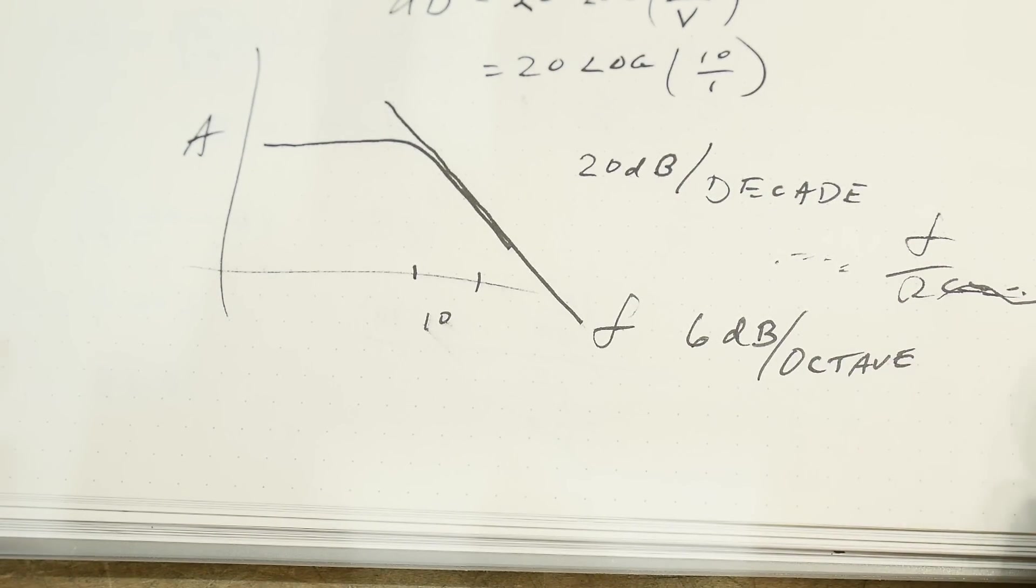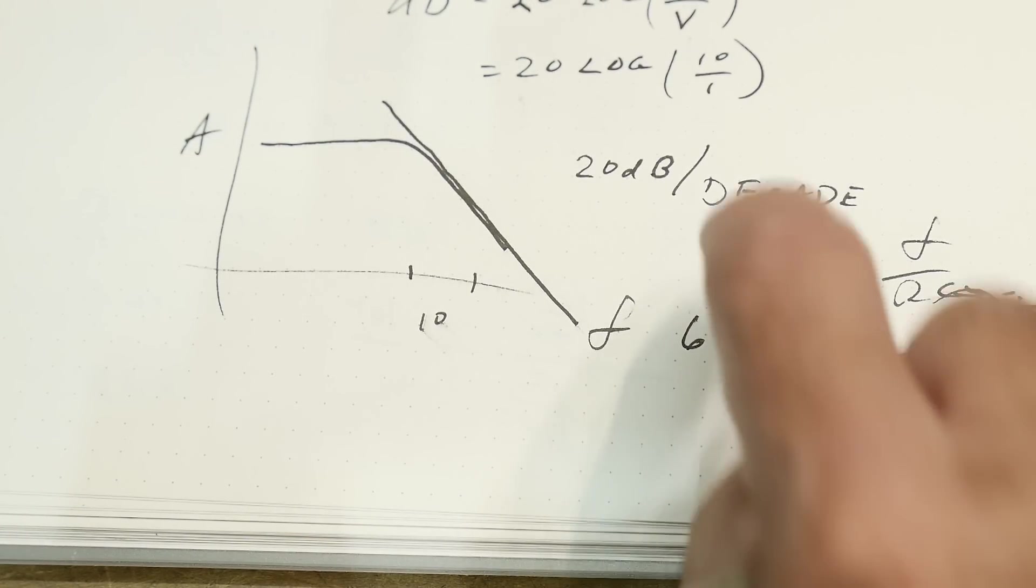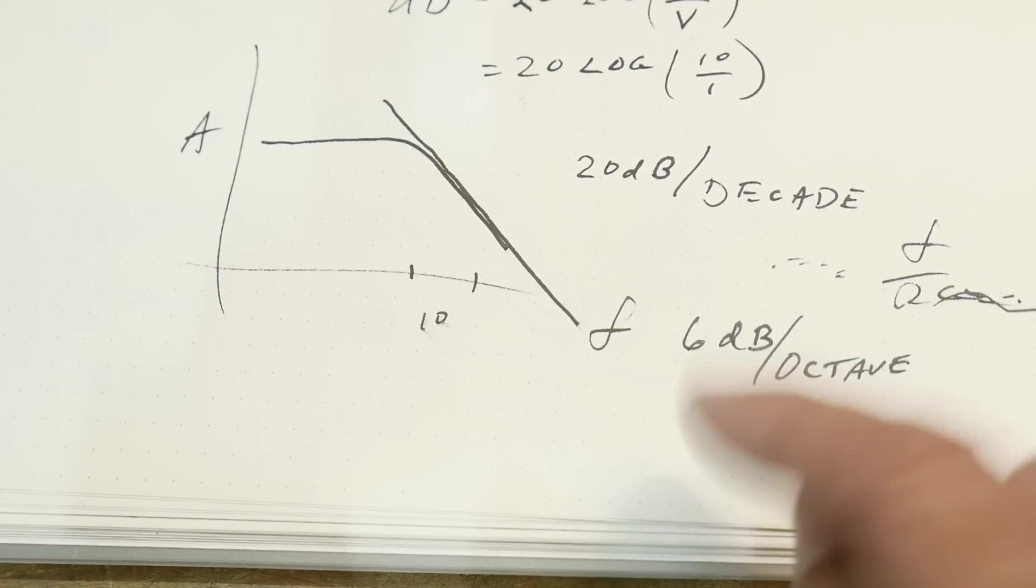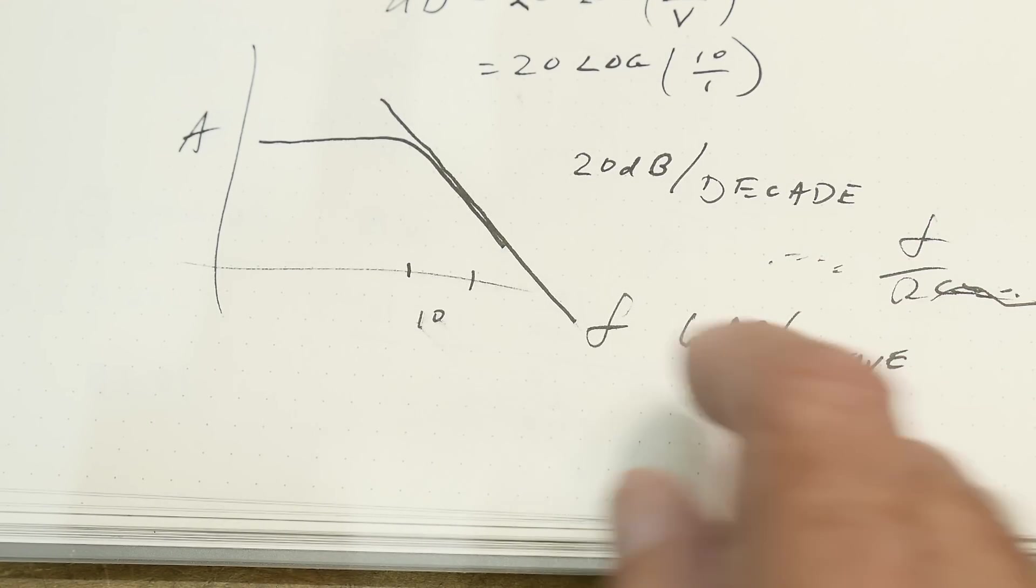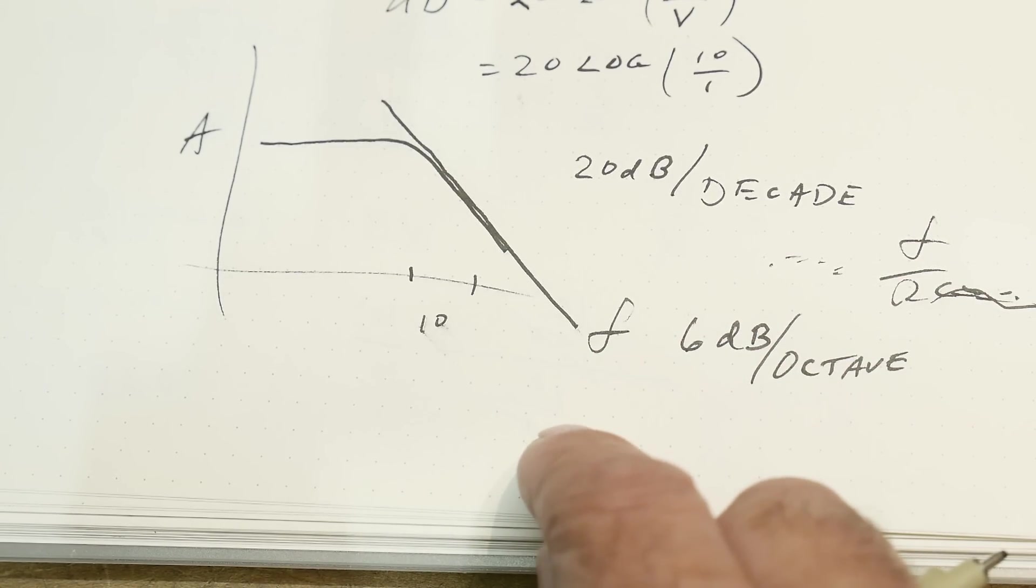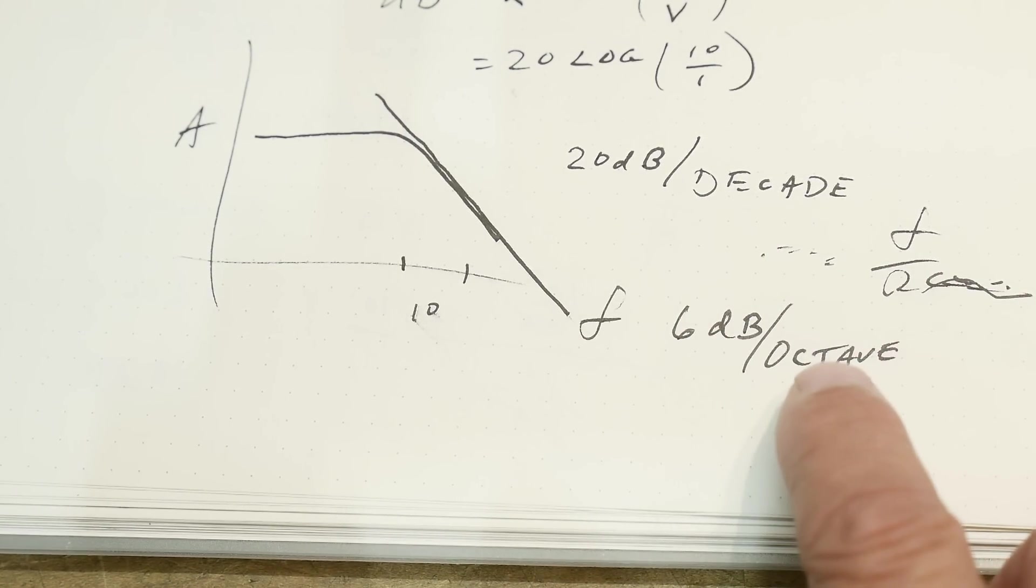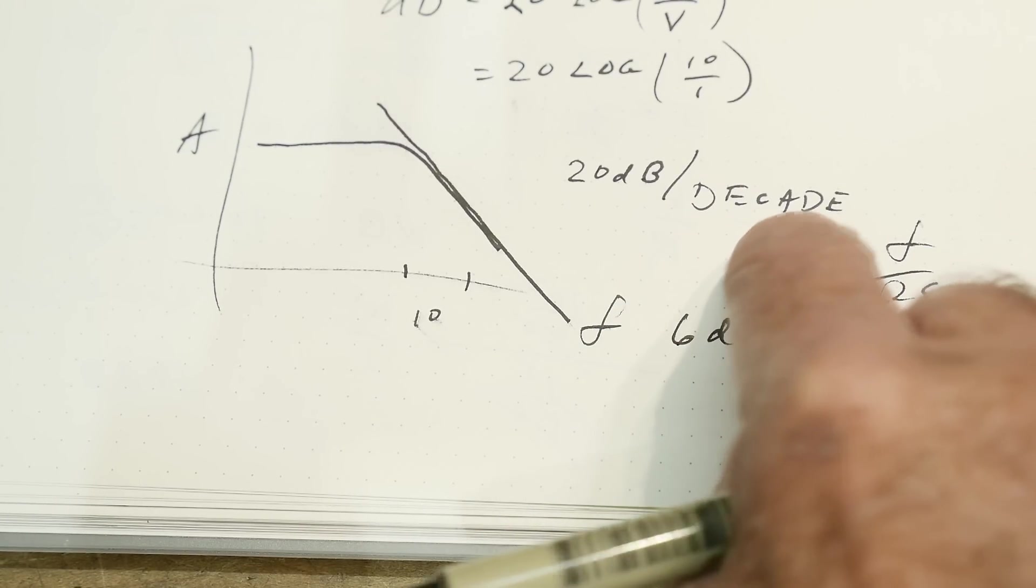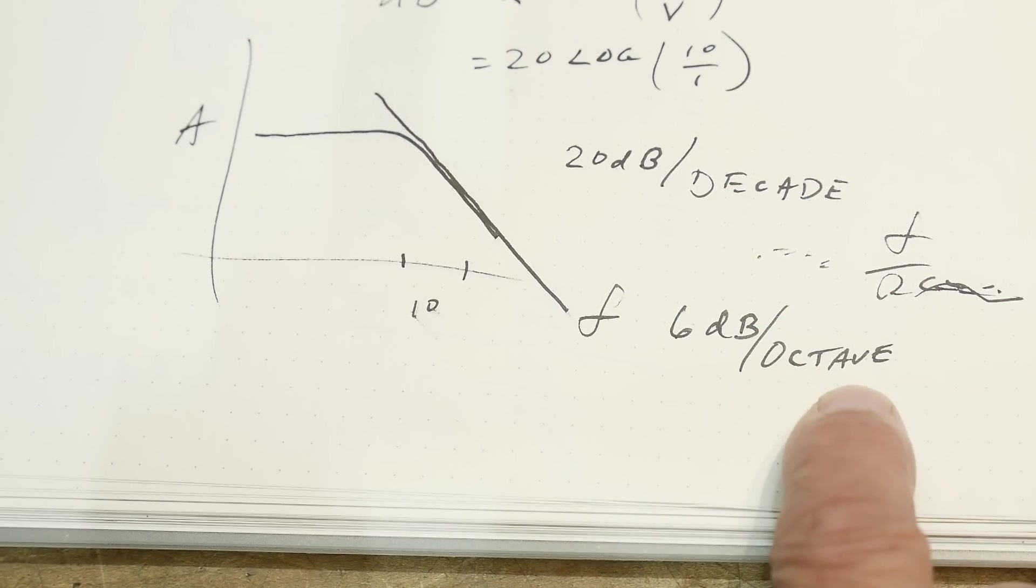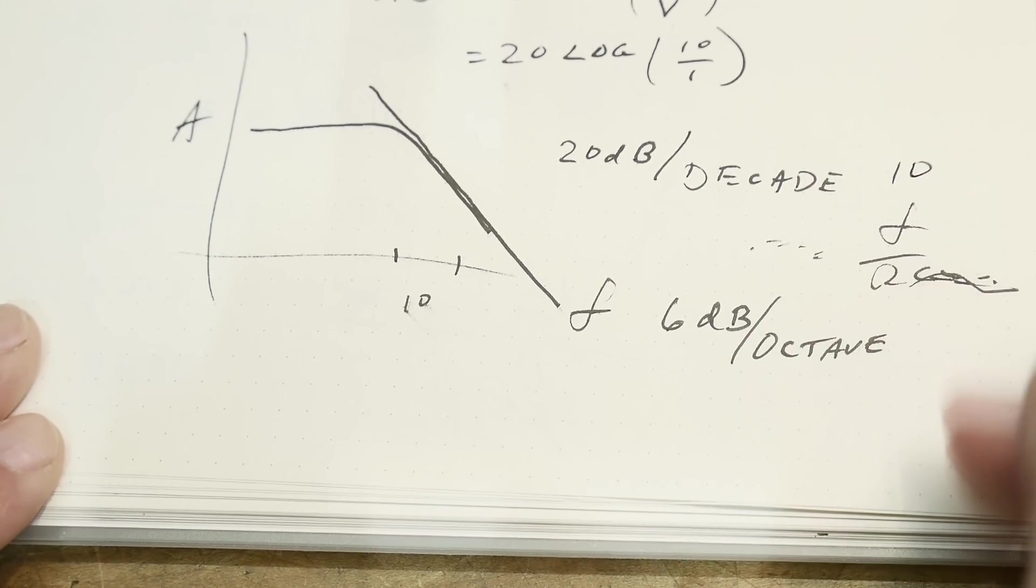And you think, oh that's something different. No, it's exactly the same thing, it's just another way of stating it. What is an octave? Well in music an octave is when you go from A 440 hertz to 880 hertz, it's double the frequency. Double the frequency is an octave.